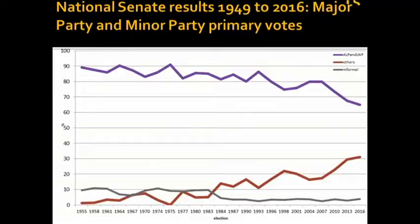Looking at some graphs: the first shows the primary vote of the major parties compared to minor parties. The purple line is the ALP and Liberal-National Party's combined primary vote; the red line is all other parties. There is a clear trend against the major parties. The informal vote, the grey line, has remained constant and low, suggesting people are still engaged in the process and happy to cast their vote as they see fit.